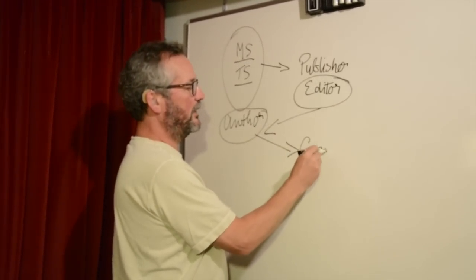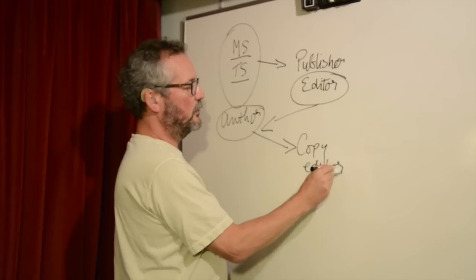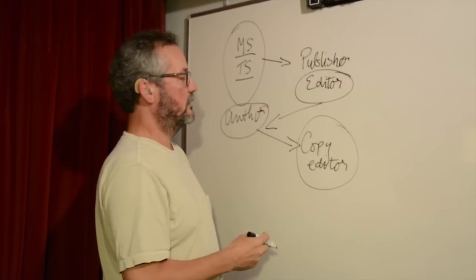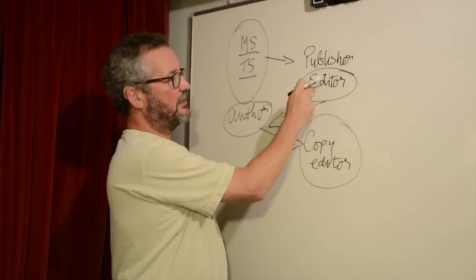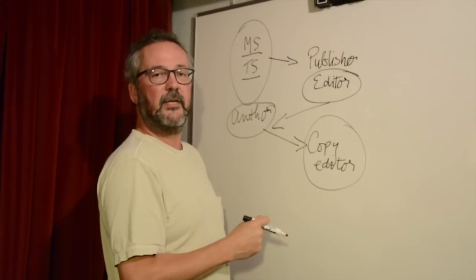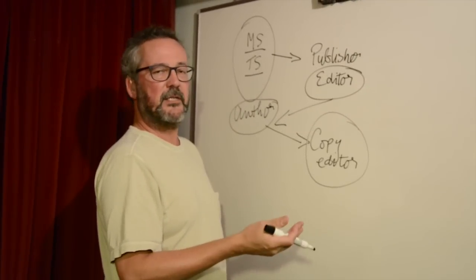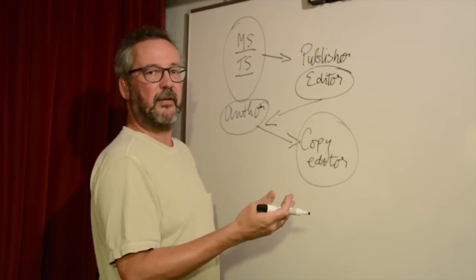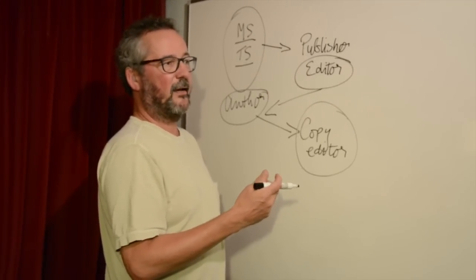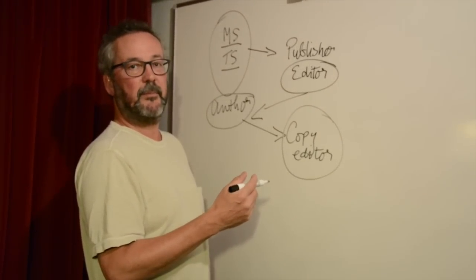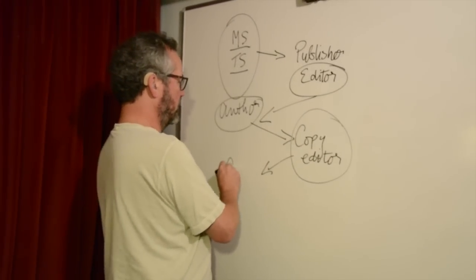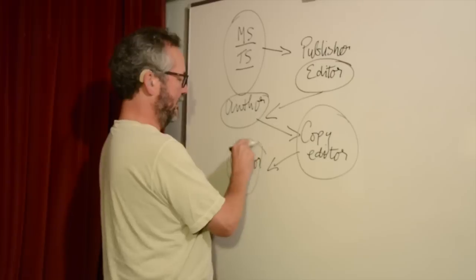So it goes to a copy editor. Copy editor usually is someone that's not employed directly by the publisher. They're self-employed people. There's a lot of self-employed copy editors. Now, the editor has made sure that they're happy with the story. The job of the copy editor is to make sure that all the red herrings are tied up, any plot direction is still working, to make sure that you haven't changed someone's hair color from brown to blonde in three pages. When the copy editor's finished, it goes back to the author.